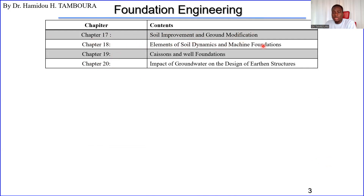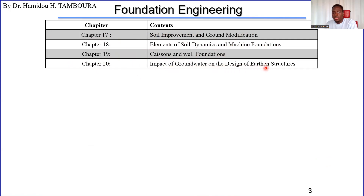We are not finished — up to 20 chapters. Chapter Seventeen is soil improvement and ground modification. Chapter Eighteen is elements of soil dynamics and machine foundations, because that one is more complicated. Chapter Nineteen is about caisson foundations and well foundations. Chapter Twenty is the impact of groundwater on the design of earth structures.